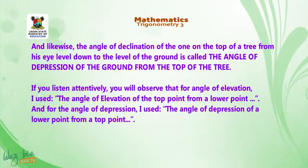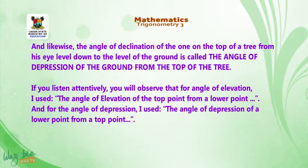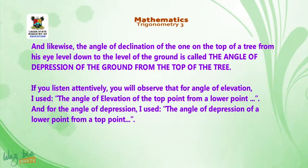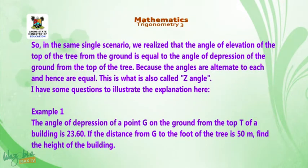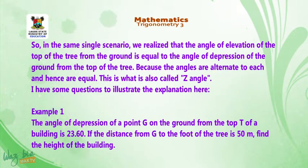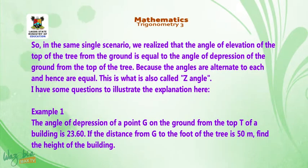If you listen attentively, you will observe that for the angle of elevation, I use the phrase 'angle of elevation of the top point from a lower point,' and for the angle of depression, it is from a top point. In the same single scenario, the angle of elevation of the top of the tree from the ground is equal to the angle of depression of the ground from the top of the tree, because the angles are alternate to each other and hence are equal. This is what we also call the Z angle.